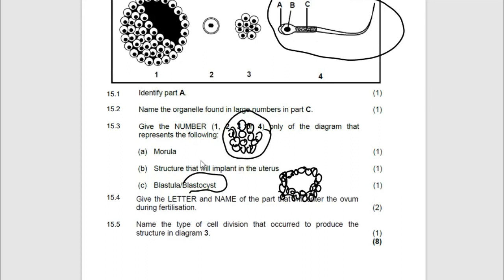So basically, morula is going to be number 3. It is going to be number 3. And then blastula is going to be number 1.